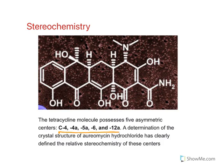Regarding stereochemistry, tetracyclines have stereocenters at C4, C4a, C5a, C12a, and C6 — giving a total of five asymmetric carbons. Understanding the importance of these stereocenters is critical: at the majority of these centers the configuration is alpha, and this alpha configuration is required for activity.